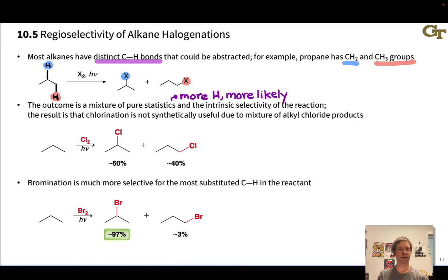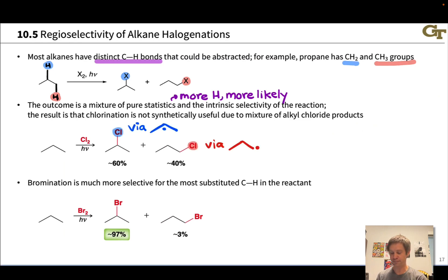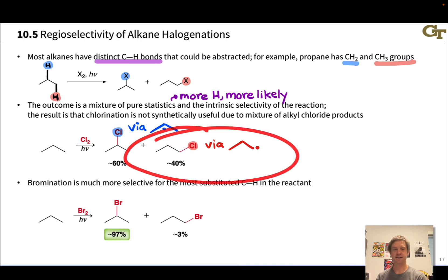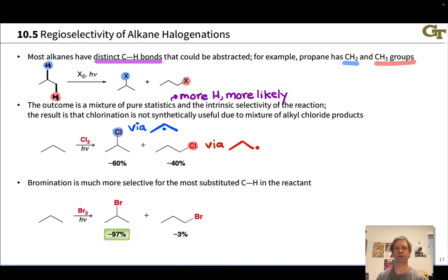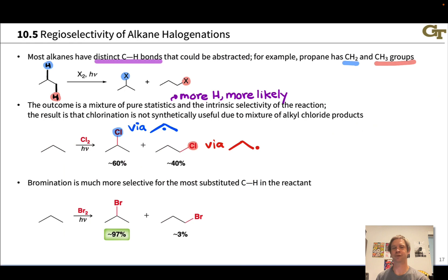Intrinsic selectivity based on radical stability can override the statistical preference, but in chlorination it often does not. For example, if we hit propane with chlorine and light, we do get a little bit more of the secondary alkyl chloride derived from the more stable secondary radical, but we get a large amount of the primary alkyl chloride as well. The selectivity is not great due to the statistical issue — six methyl hydrogens versus only two secondary hydrogens creates a statistical bias for the primary alkyl chloride.